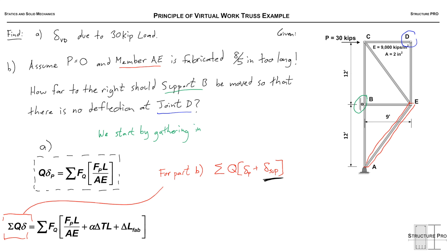We should start by gathering the information that's in these equations. We need our P system to solve for FPs and our length of our members. And our Q system. We need to know what Q is and our member forces due to Q, FQ.